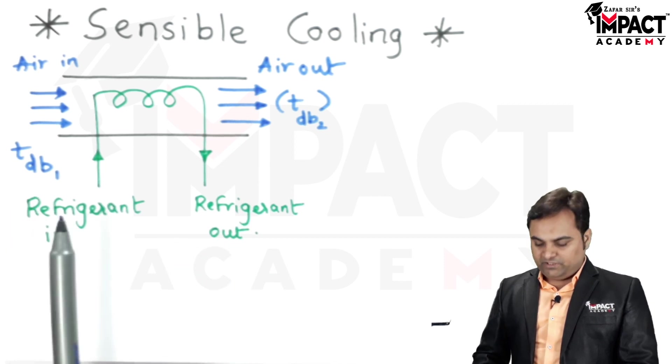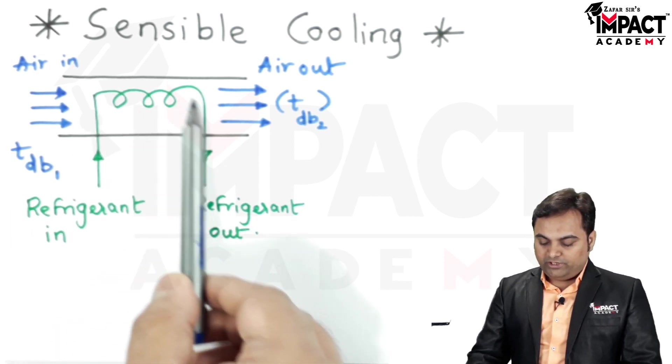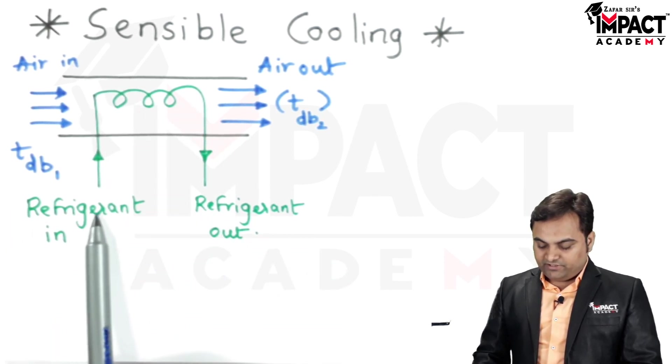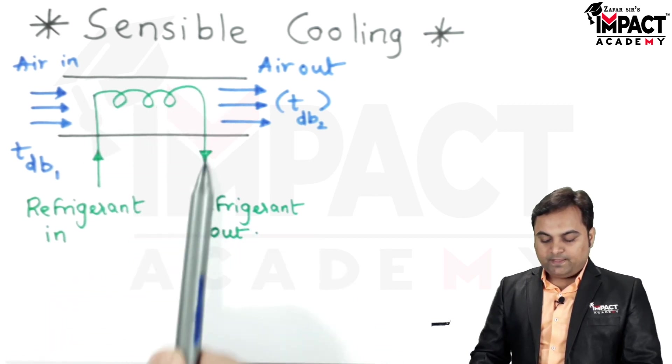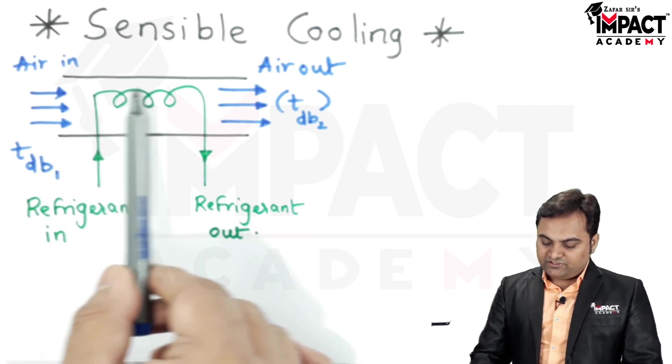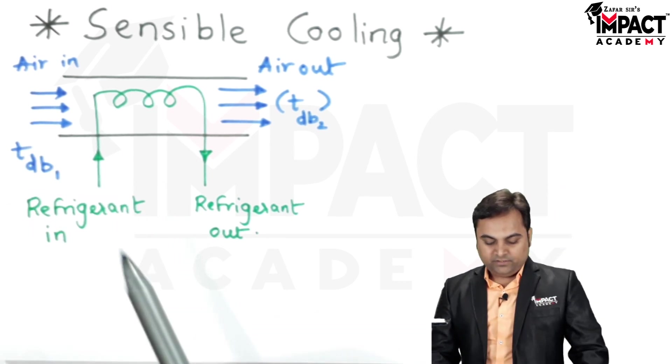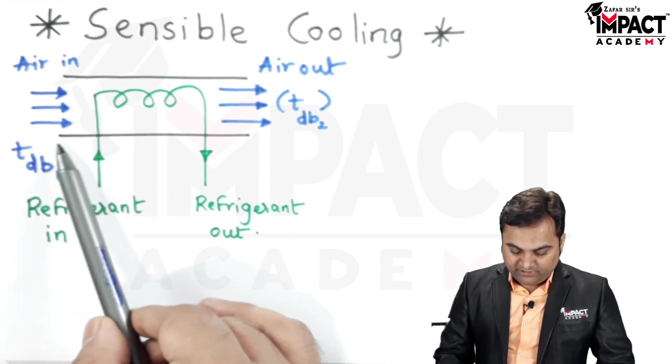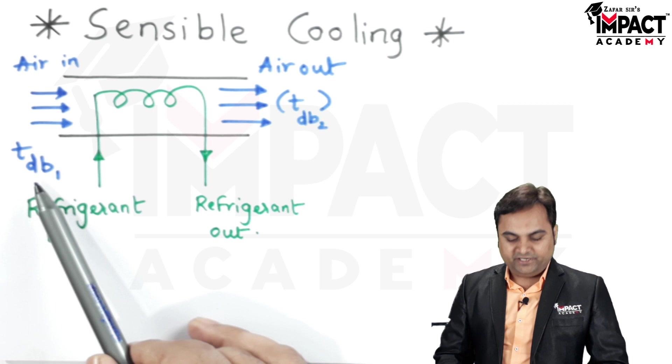For that here we have a diagram in which there is a cooling coil in which a refrigerant is flowing, and that refrigerant will absorb the heat of the incoming air. Here the incoming air is at dry bulb temperature tdb1.